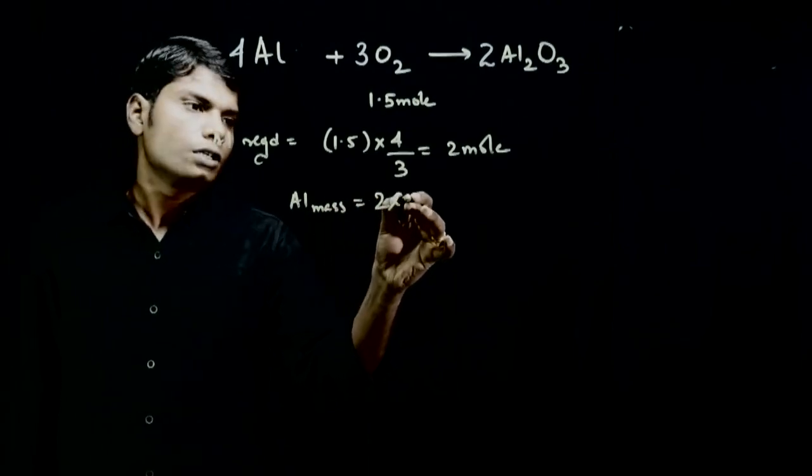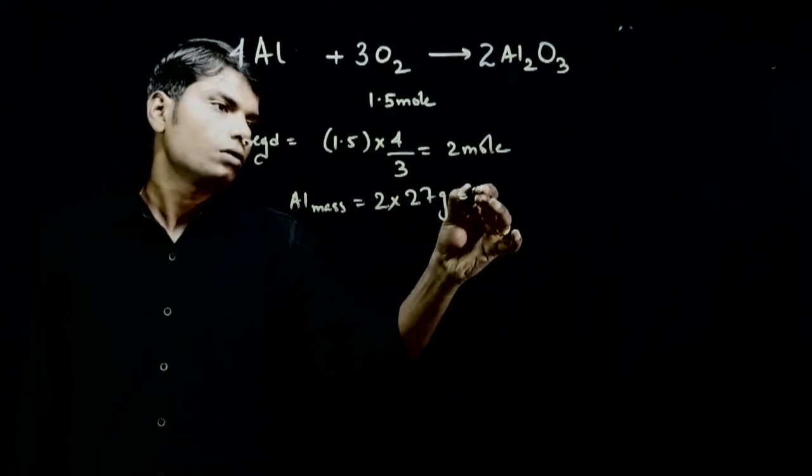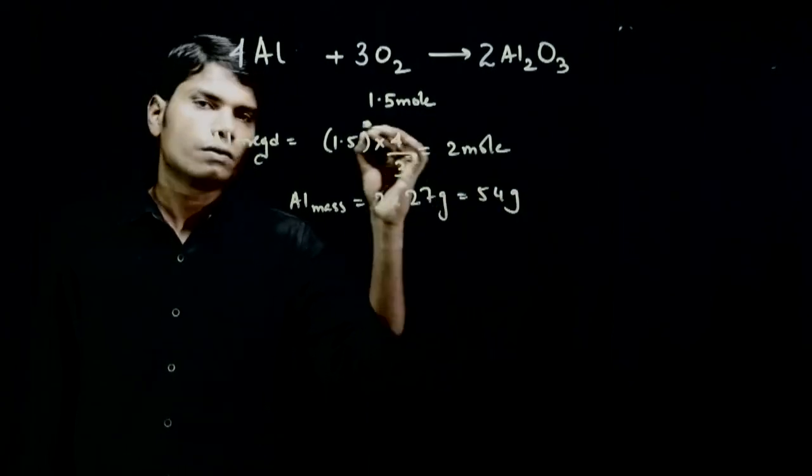To find mass, we use number of moles times atomic mass. The atomic mass of aluminum is 27 grams, so the answer is 54 grams.